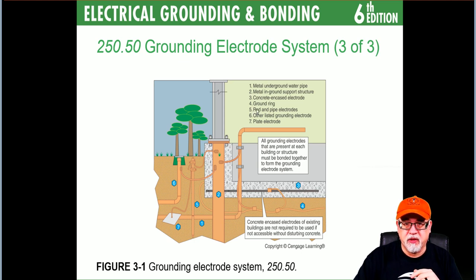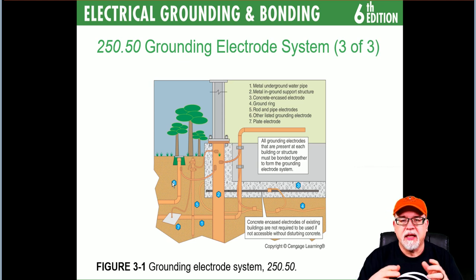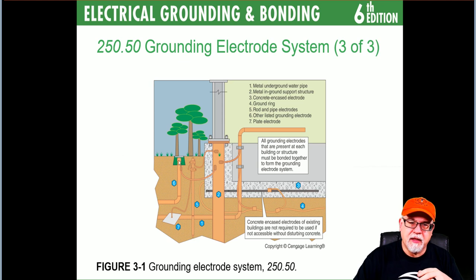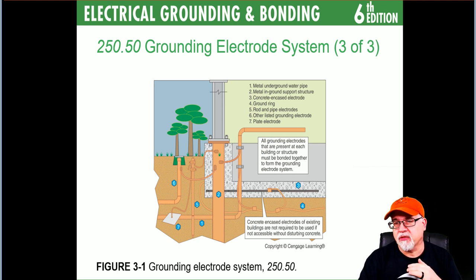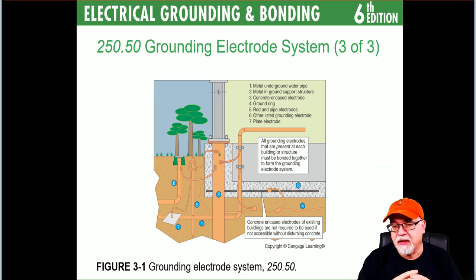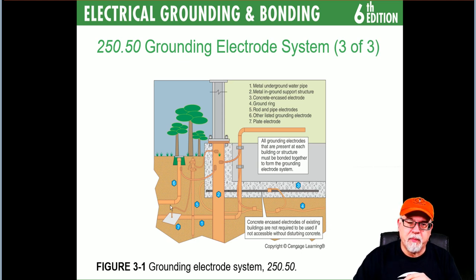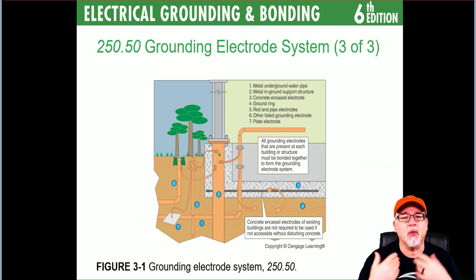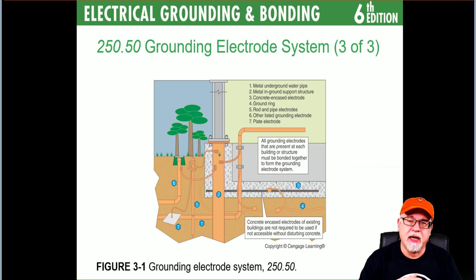Number six is other listed grounding electrodes. One example is a chemical rod where you put certain chemicals in it and it saturates out into the earth — it has a connection made to it. If it's listed for grounding as a grounding electrode, you can utilize it. And number seven is the plate, which gets placed into the earth. There's a required amount of surface area, which we'll cover in the program.